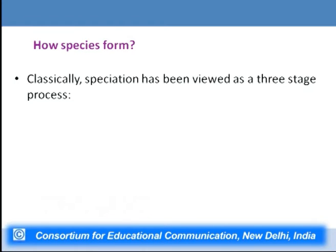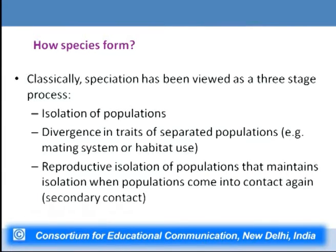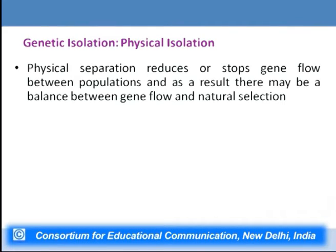Classically, speciation has been viewed as a three-stage process. First is isolation of populations of a given species. Second is divergence in traits of the separated populations — there is accumulation of traits leading to divergence. Third is reproductive isolation of the populations, which maintains isolation when populations come into contact again — secondary contact. Physical isolation is very important for formation of species. Physical separation reduces or stops gene flow between populations. For example, in Lake Erie there is a water snake where on the island, selection favors elimination of alleles that give banding patterns to the snakes. But there is continuous migration from surrounding areas, and genes coding for bands are continuously reintroduced. If the islands were to be completely separated so that no snakes migrated, natural selection would result in the island population becoming different from the mainland ones.